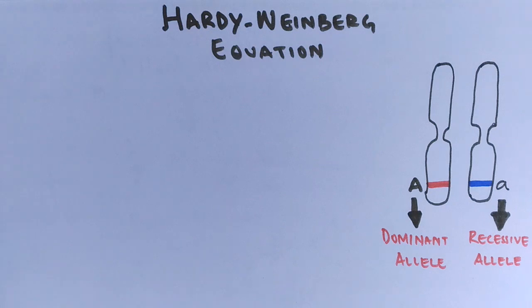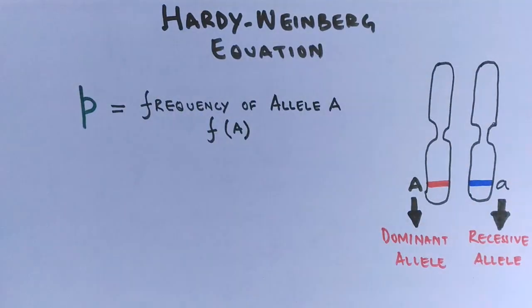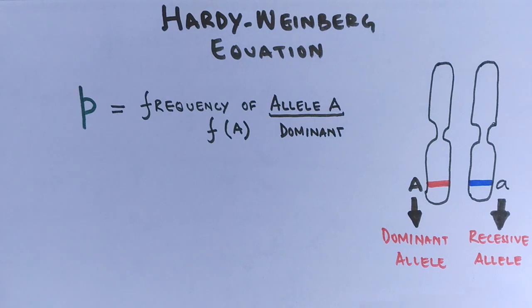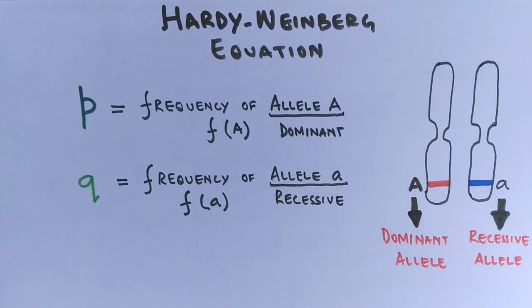Let's see the frequency of alleles first. We assign letter P for the frequency of allele A, the dominant one, and Q denotes the frequency of allele a in lowercase, the recessive allele.